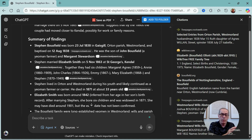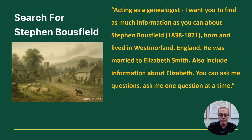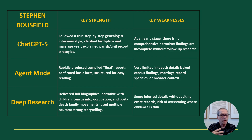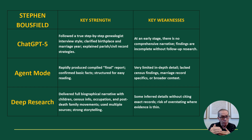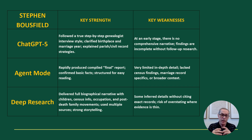So we have the three modes: conversational, agent mode, and deep research. Looking at strengths and weaknesses — ChatGPT is high level, it clarifies information, it's more 'here are your next steps' rather than a narrative. Agent mode produces a final report with facts in bullet points but didn't have the in-depth detail, missed some sources that deep research had, and lacked census findings and some marriage specifics.